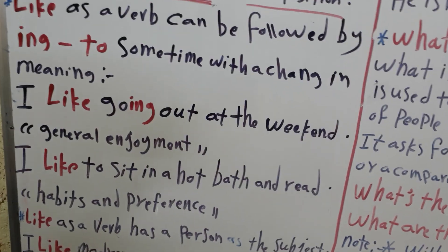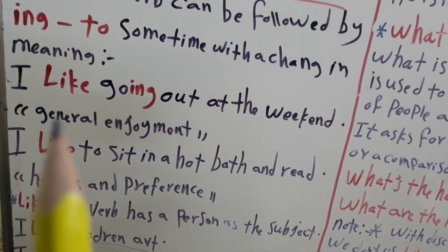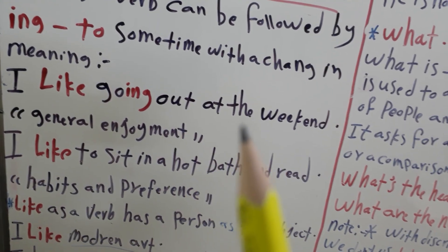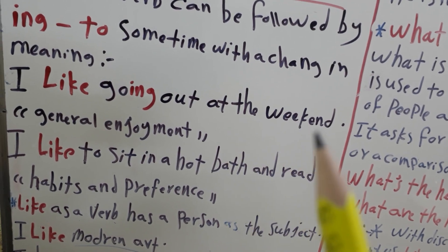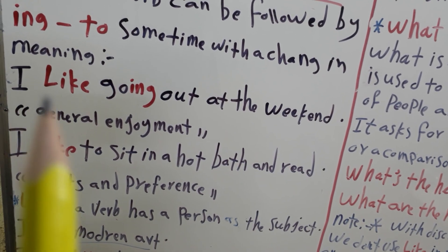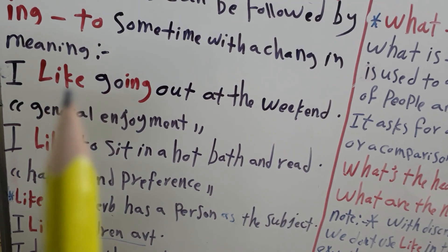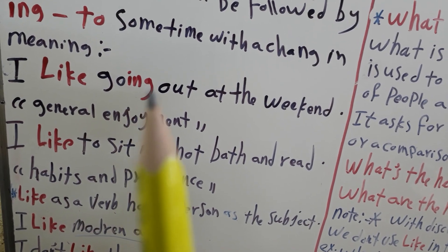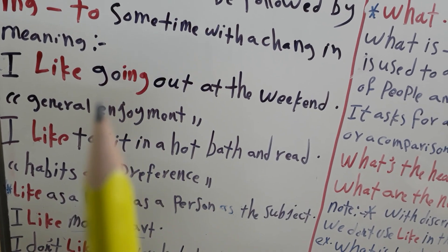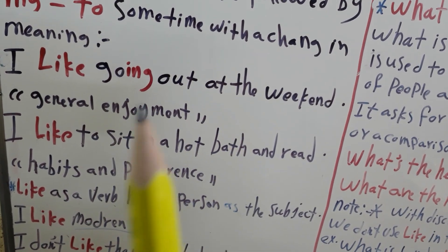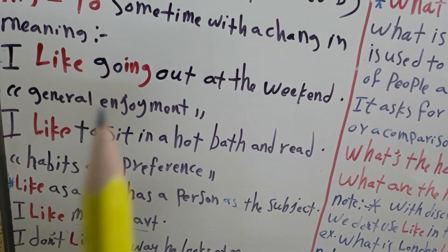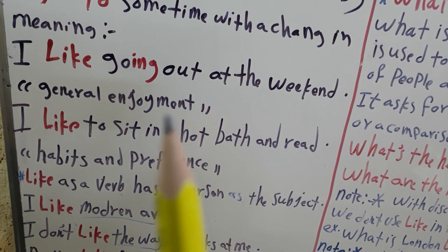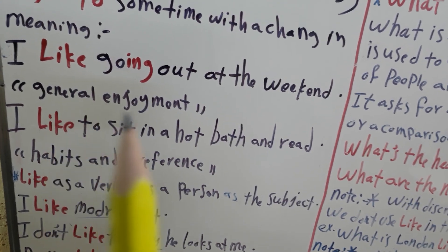Now we will see in the examples. 'I like going out at the weekend.' I use 'like' plus verb with -ing. This sentence means general enjoyment.